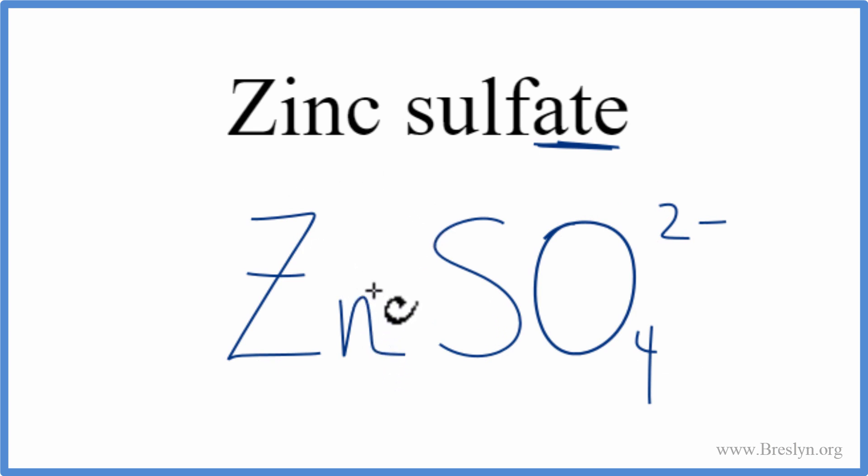Zinc is a transition metal, but it's a bit of an exception. Zinc always has a 2 plus ionic charge. The sulfate, we said that was 2 minus. 2 plus, 2 minus, that adds up to zero. The net charge is zero, and this is the correct formula for zinc sulfate.